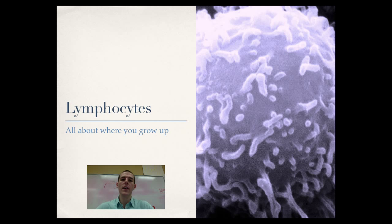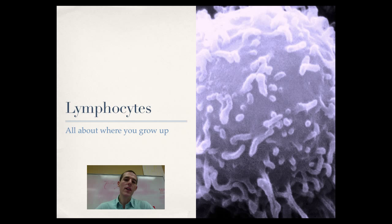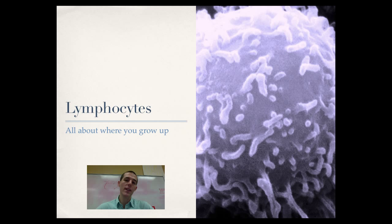To decide whether a cell is a T cell or a B cell, it's all about where they grow up. Lymphocytes are all generated in the bone marrow. If they hang out in the bone marrow to mature, they are known as B cells — B for bone marrow. Others travel to the thymus gland, an organ located in your thoracic cavity, and if they mature there, they are known as T cells. So B cells grow up in the bone marrow, T cells grow up in the thymus.